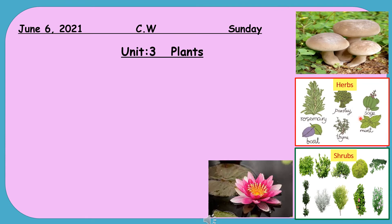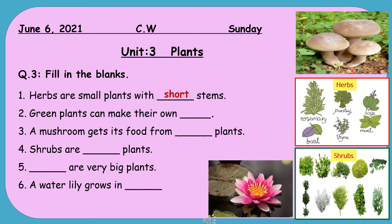Open up your science notebooks, draw the margin line, write down the date on the left top corner. Today is June 6, 2020 and the day is Sunday. In the first line you have to write Unit 3 Plants. From the second line of your page, write down Question Number 3, and that is Fill in the Blanks.